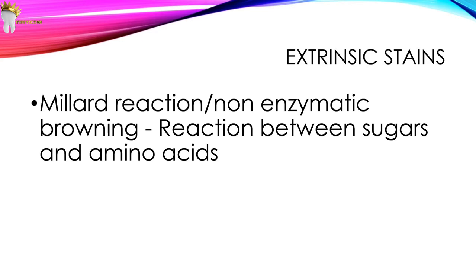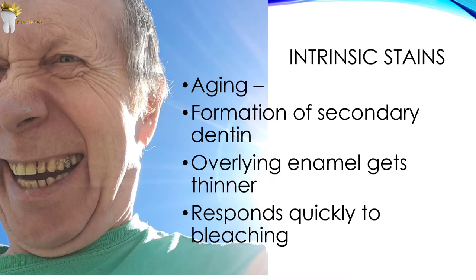Most extrinsic stains can be removed by routine prophylactic procedures, and with time they can darken and become more persistent but can still be lightened by bleaching. Intrinsic stains can be caused by aging — a common cause of discoloration. With aging, the underlying dentine tends to darken due to the formation of secondary dentin, which is darker and more opaque than the original dentin. With aging the overlying enamel also becomes thinner, so this combination results in darker teeth.